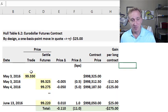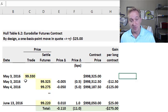I did add a column here for the price, but otherwise it's the same. The idea is that the trader on May 3rd, 2016 enters at the trade price of 99.33.